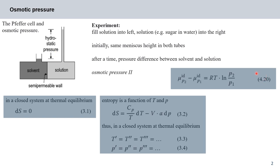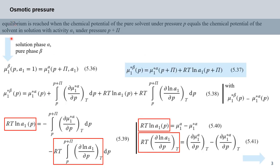Recall from lecture 8 equation 420: equilibrium will be reached when the chemical potential of the pure solvent under pressure p equals the chemical potential of the solvent in the solution with activity a₁ under pressure p plus large pi. We use the activity a₁ here (I mistakenly said alpha₁ earlier — apologies for that).